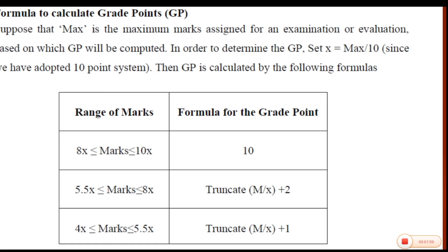It says suppose that max is the maximum marks assigned for an examination or evaluation based on which the grade point will be computed. In our case it is 100, so 100 is the maximum marks for the subject. Therefore, in order to determine the grade point, set x equal to max divided by 10. Max is 100, so x comes out to be 100 divided by 10, which makes it 10.